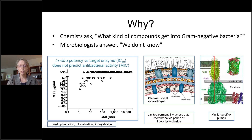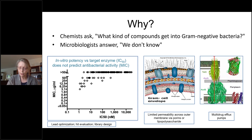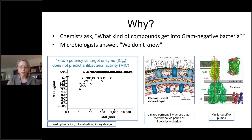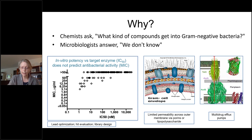We know why this is. Compounds vary in how well they reach the target enzyme, in this case in the cytoplasm. But we don't know how to design compounds to overcome the combined defenses of the outer membrane permeability barrier and the multidrug efflux pumps, despite a lot of knowledge about the structure and function of these transporters and channels. Our inability to improve compound uptake is one of the main reasons antibiotic discovery projects are terminated. It would be extremely helpful to be able to measure the concentration of compounds within bacterial cells or to measure efflux directly, independent of their antibacterial activity. This would be useful in lead optimization, also earlier in a project during hit evaluation, or earlier still when designing libraries for screening.